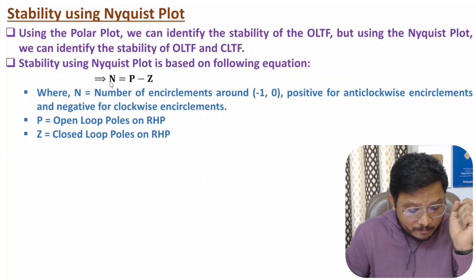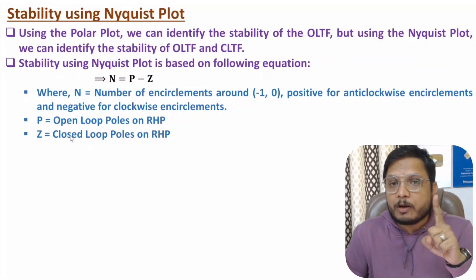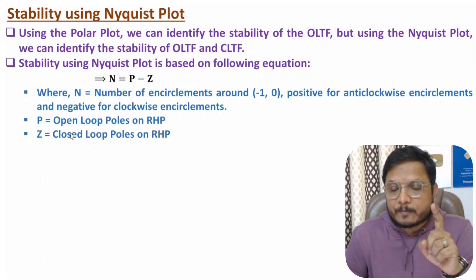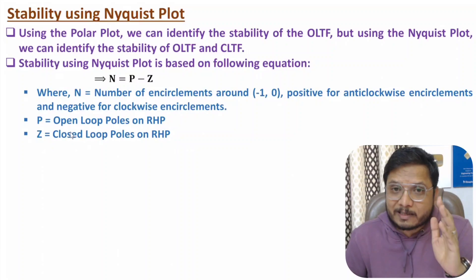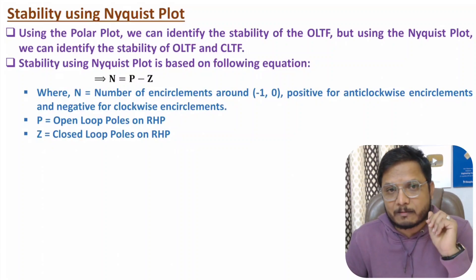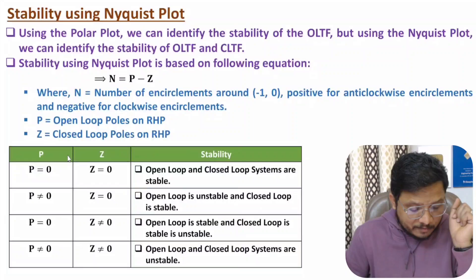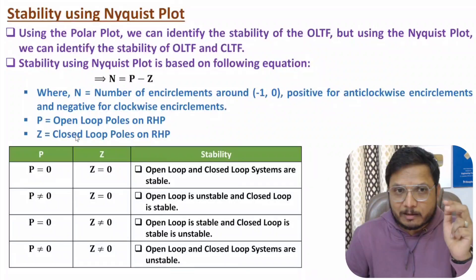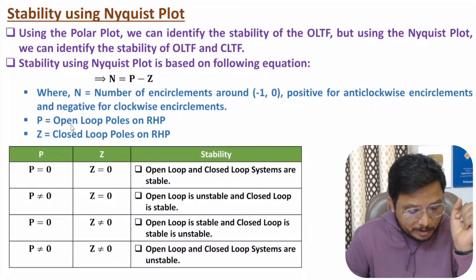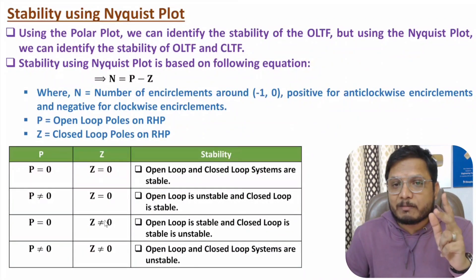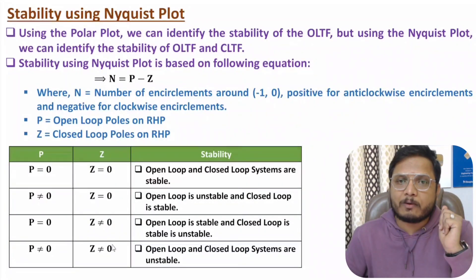Using this equation we can identify stability of both open loop and closed loop systems. If P equals 0 and Z equals 0, then both systems are stable. If P is not zero, the open loop system is unstable. If Z is not zero, the closed loop system is unstable.